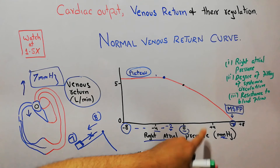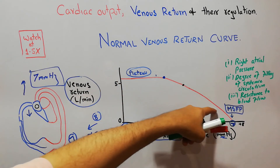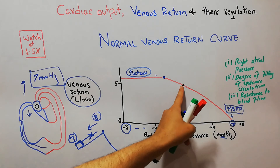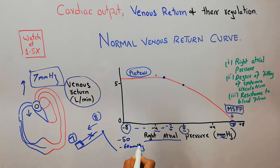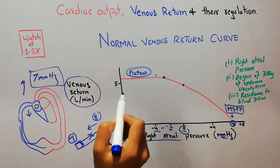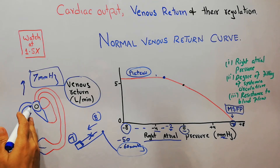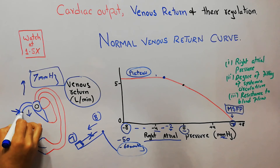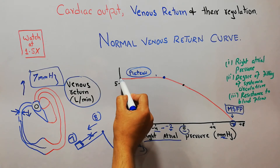With increasing right atrial pressure, the venous return slowly decreases towards zero at 7 mmHg. With decreasing right atrial pressure, there is a slight increase, after which a plateau is seen. Even if the right atrial pressure reaches minus 50 or minus 60 mmHg, there is still no further increase in venous return, because the veins collapse under low pressure and are unable to allow more blood through.